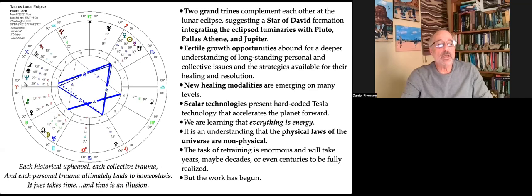Two grand trines complement each other at the lunar eclipse, suggesting a Star of David formation, though it's not quite all in orb, that integrates the eclipsed luminaries with Pluto, Pallas Athena, and Jupiter. So fertile growth opportunities abound for deeper understanding of the longstanding personal and collective issues and strategies available for healing and resolution.